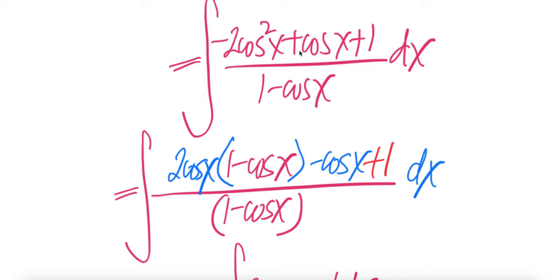And then here you get 2 cos x, but you need cos x. So you remove cos x from the 2 cos x, you get cos x. Don't forget to put that plus 1 back.